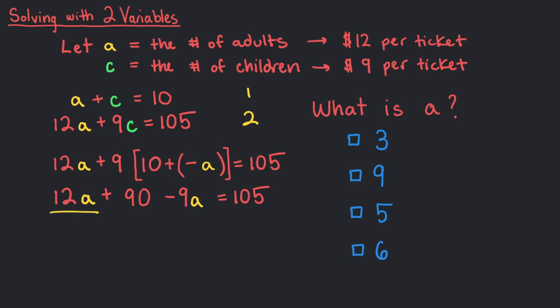We can combine the 12a and negative 9a together to equal 3a, and then subtract 90 from both sides, leaving us with 15. 3a equals 15. To isolate a, we divide each side by 3 for a to equal 5, but we're not done.